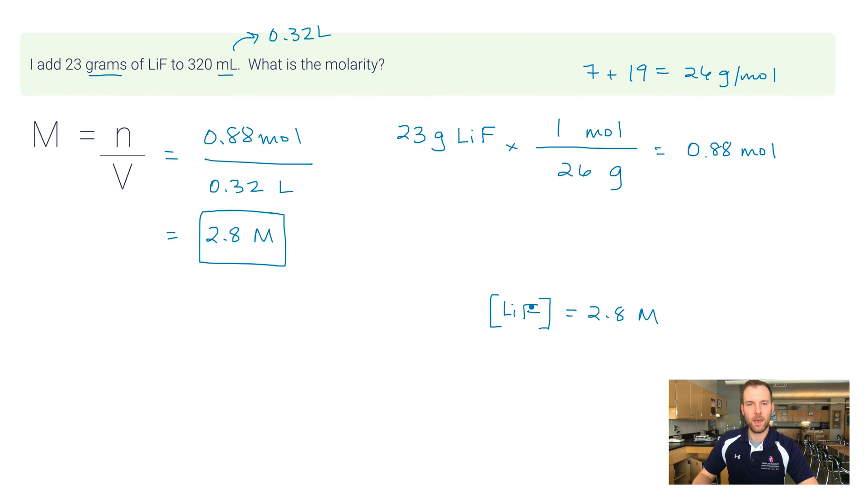So, the one other thing I can mention: sometimes if we want to refer to molarity quickly (so like the molar concentration of LiF in this case) we would put LiF's chemical formula in square brackets like this. And that means that the molar concentration of LiF, or the molarity of LiF, is equal to 2.8 molar. So sometimes you'll see these square brackets pop up and it just means the molarity.